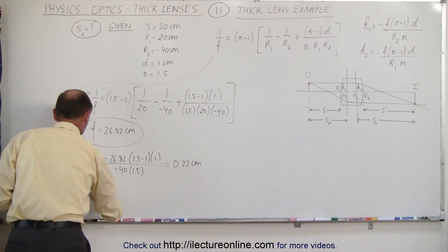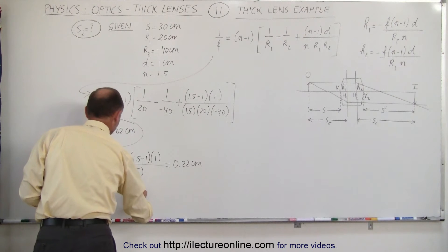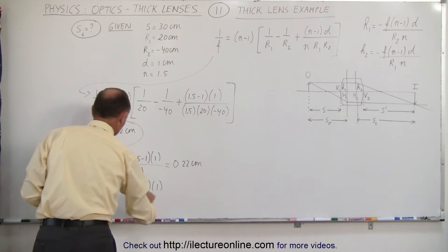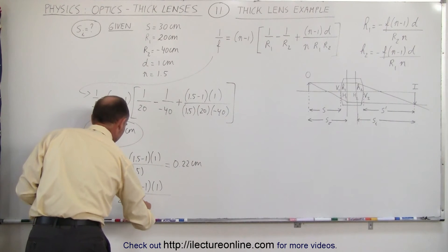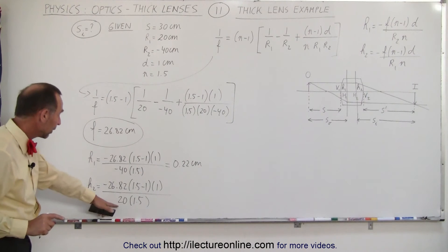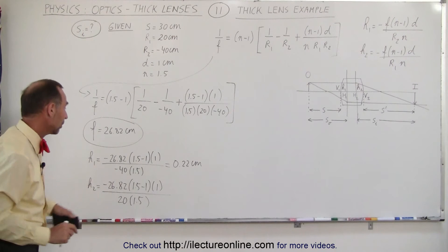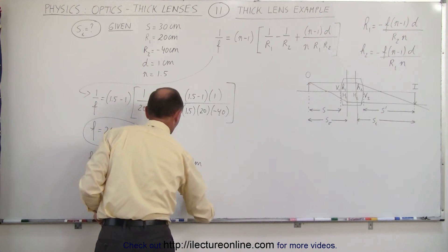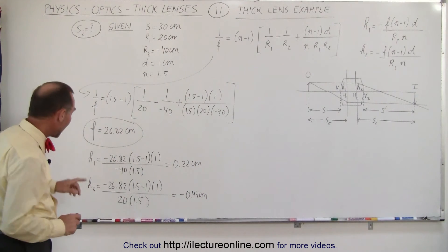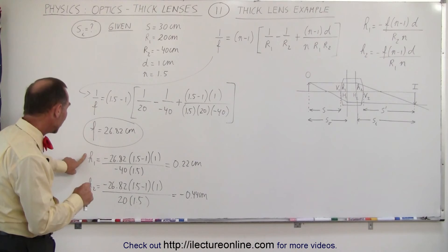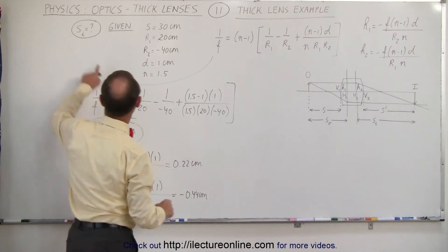Now for h2. So we get the same number, minus 26.82 times 1.5 minus 1 times 1, so the numerator is exactly the same. The denominator notices a positive 20, and the denominator times 1.5. So dividing by 20 instead of 40 makes it twice as large, and the negative sign will remain because this is positive, so this becomes a minus 0.44 centimeters. Now that we have the distances, h1 and h2, which are the distances from the principal points to the vertices, we're now ready to find the answer, s sub i.